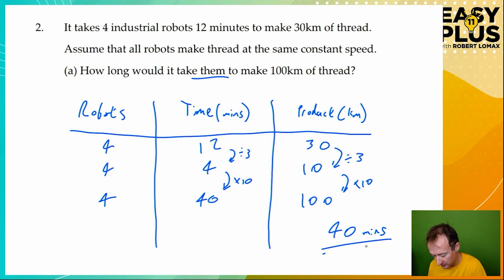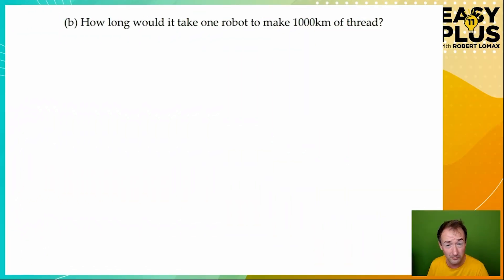And so our answer is very simply 40 minutes. We can just write mins, and that's absolutely fine. So this is actually quite a simple question if you break it down in this way, using the table and labeling it clearly. And it's made nice and easy by the fact that the number of robots in the left column never needs to change. Let's look at part B. How long would it take one robot to make 1000 kilometers of thread? Now the last part of part A left us with 100 kilometers. So that might be a good starting point from which to work.